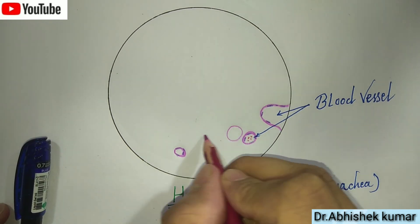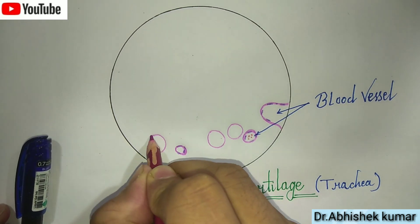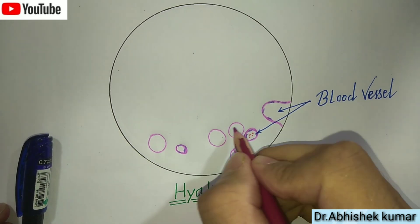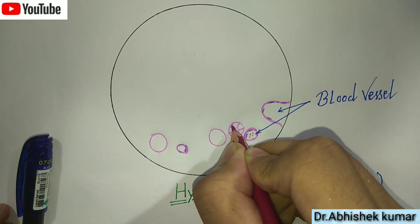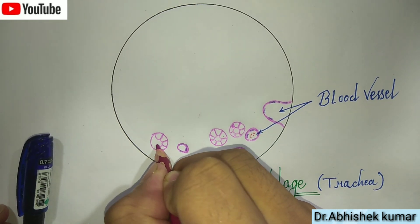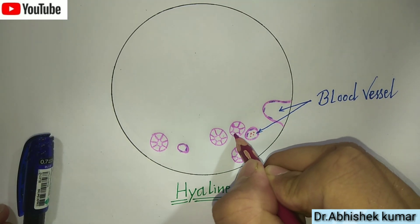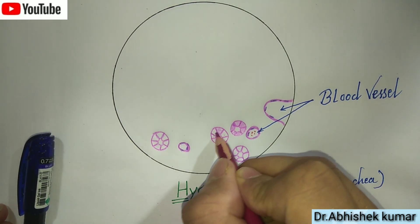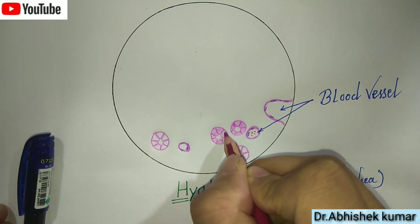Here we can see the presence of blood vessel. The cartilage is classified as specialized connective tissue.